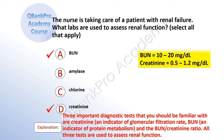Explanation: Three important diagnostic tests that you should be familiar with are creatinine, an indicator of glomerular filtration rate; BUN, an indicator of protein metabolism; and the BUN-creatinine ratio. All three tests are used to assess renal function. The exam will ask about care of acute renal failure and diagnostic testing.